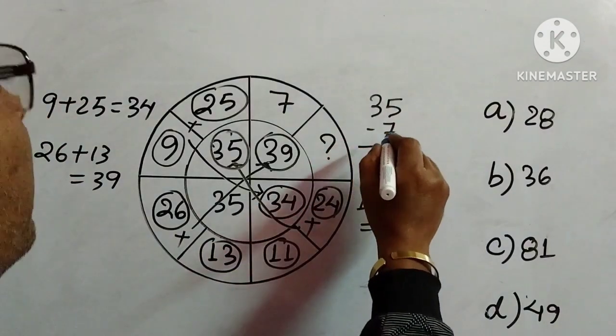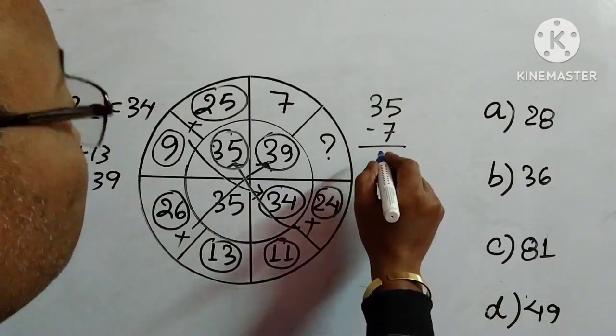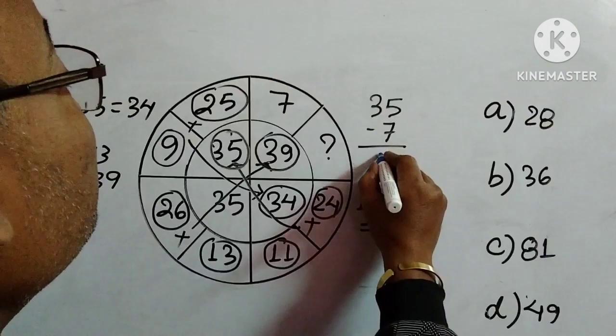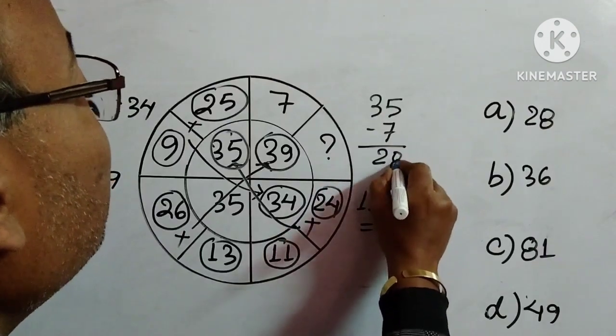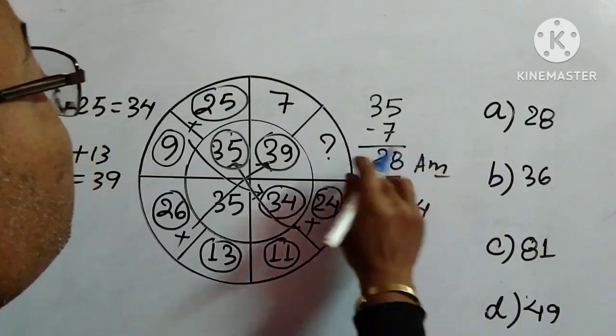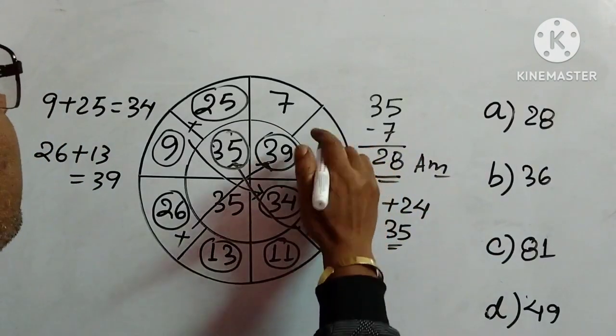If we subtract 7 from 35, what is the result? 28. So here we have to write 28.